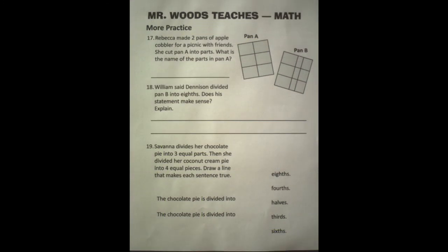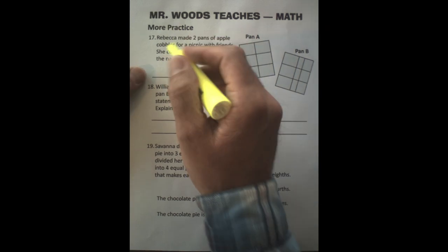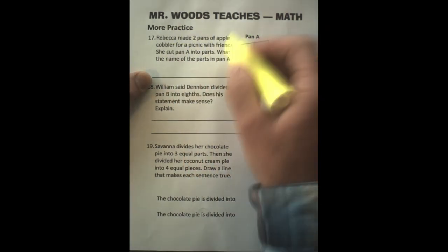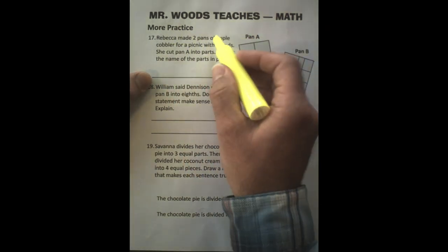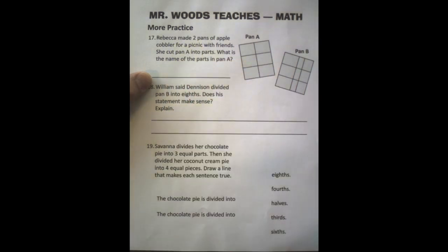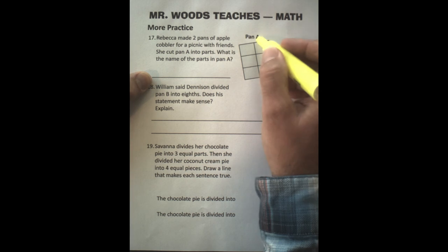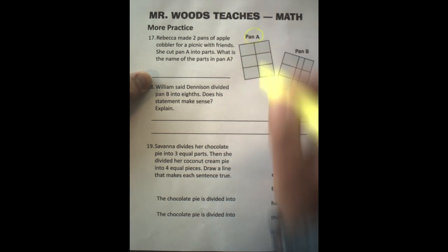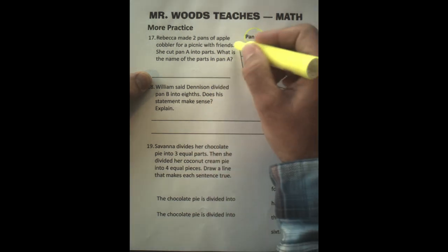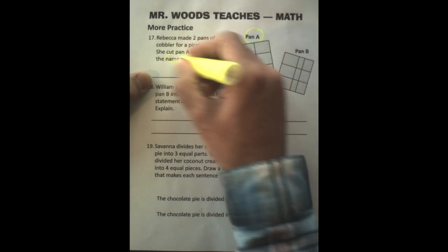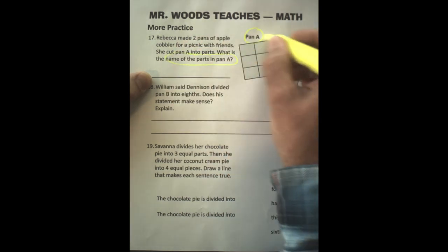This is your last practice sheet. It's a little more difficult, so let's go through it here together. So up here it says Rebecca made two pans, so we have two pans over here, of apple cobbler for a picnic with friends. She cut pan A into parts. There's pan A. What is the name? So here we go. The name of the parts in pan A. We're just working with pan A for this one.